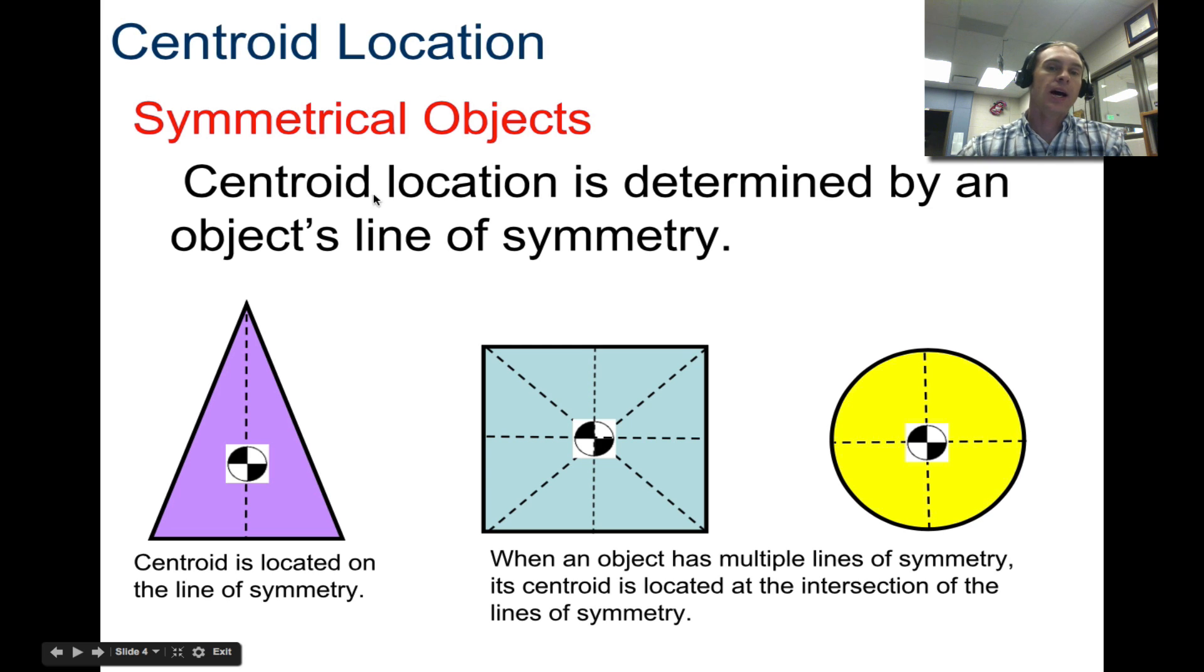Symmetrical objects have a center location that is determined by the object's line of symmetry. This is a symmetric object, so the centroid is located on that line. We don't necessarily know where yet just by looking at it, but it's located on that line of symmetry. If you have multiple lines of symmetry, it's located at the intersection. For a square, it's quite a bit easier. A circle has infinite lines of symmetry, so that's going to be located directly in the middle. So that's a centroid location.